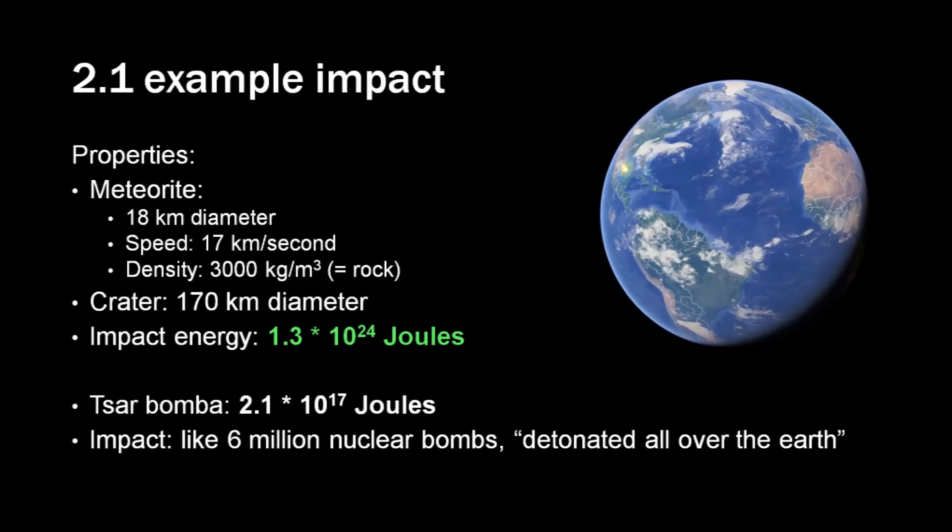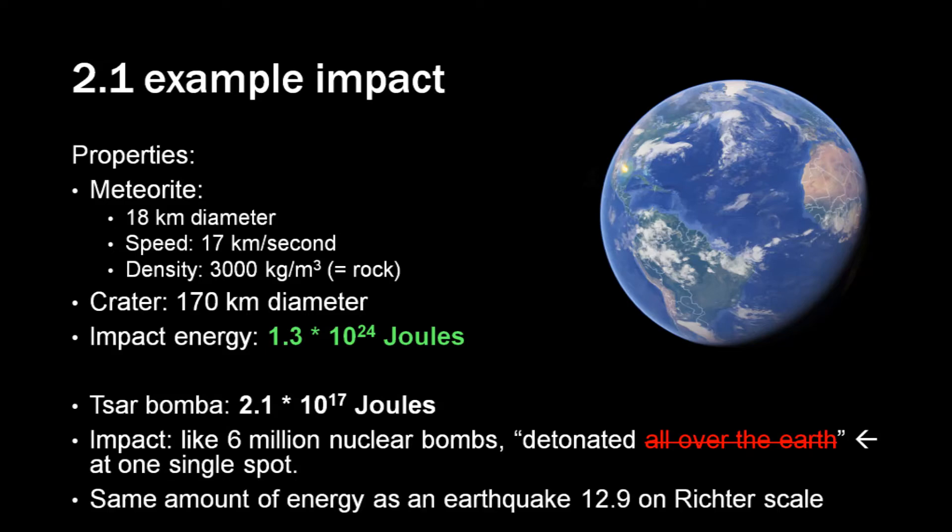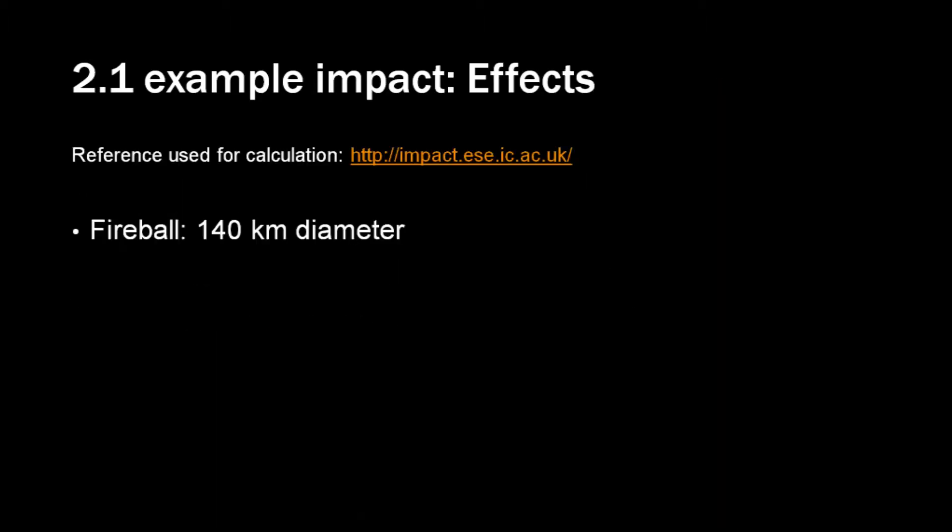This caused even window shattering in northern Finland. This single bomb released a lot more energy than all bombs in both world wars combined. But nobody got killed. Now let's get back to the impact. As you can see, the impact is like detonating 6 million nuclear bombs all over the world at once. Well, not exactly. It is the amount of energy released, but at one single spot. And that matters.